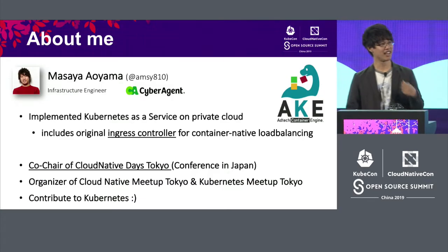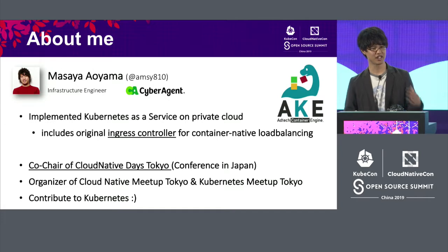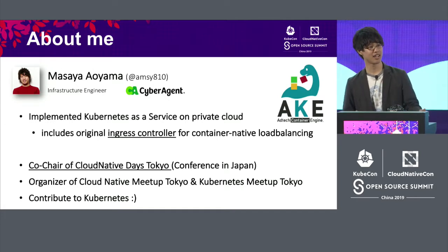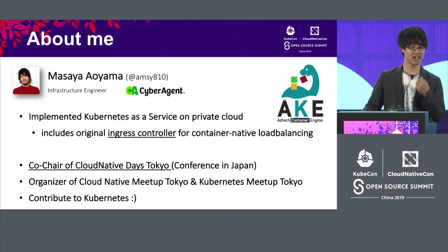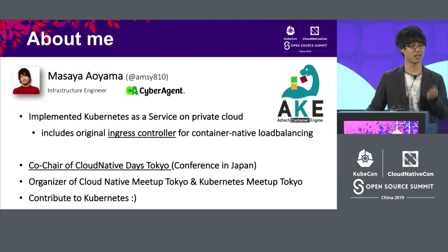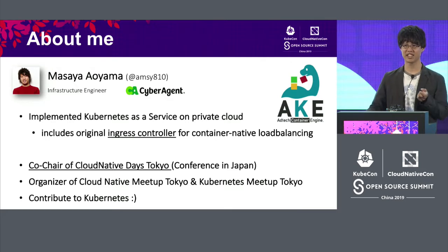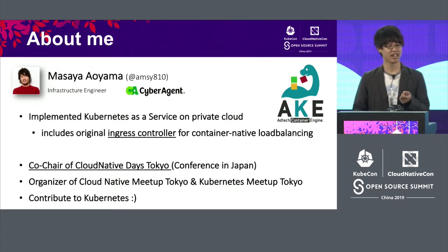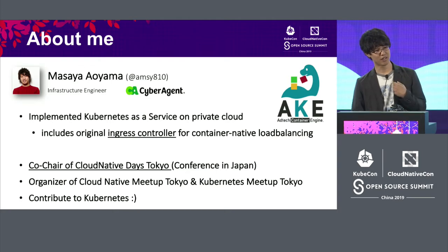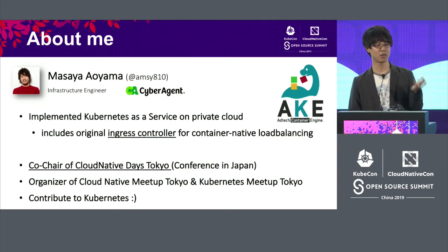I'm Masaya, and I'm an infrastructure engineer working at CyberAgent. My main job is implementing Kubernetes as a service platform on the private cloud, which includes a customized ingress controller for container-native load balancing. I'm also a conference co-chair and meet-up organizer.